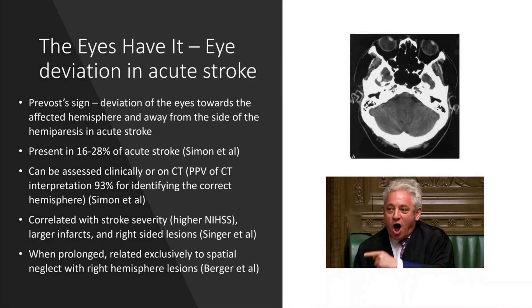This presentation is about eye deviation in acute stroke, inspired by a recent case. Eye deviation is a fairly reliable sign for localising which hemisphere is affected in acute stroke. First described by Prevost in the 19th century, the concept is that the eyes deviate towards the affected hemisphere and away from the side of the hemiparesis.